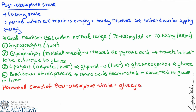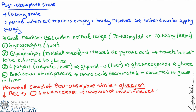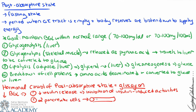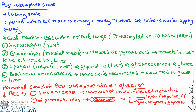The primary hormone of the post-absorptive state is glucagon. In response to decreased blood glucose, insulin release is suppressed — inhibiting insulin-induced cell activities — and the alpha cells of the pancreas secrete glucagon into the bloodstream. Glucagon travels to the liver, where hepatocytes perform glycogenolysis and gluconeogenesis, and to adipose tissue, where lipolysis occurs, releasing fatty acids and glycerol into the bloodstream.